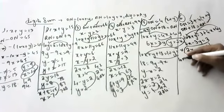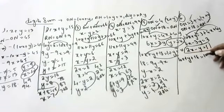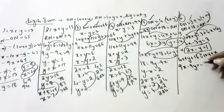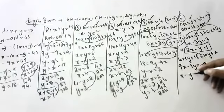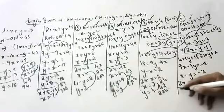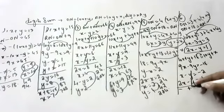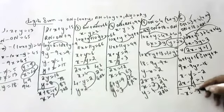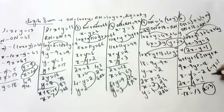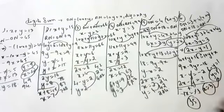Also, 10X plus Y plus 18 is equal to 10Y plus X, so 9X minus 9Y is equal to 18, giving X minus Y is equal to minus 2. From the two equations — 2X minus Y equal to 1 and X minus Y equal to minus 2 — subtracting: X is equal to 3. Substituting back: 2 times 3 minus Y equals 1, so Y is equal to 5. Original number is 35, reversal number is 53, digits are 3 and 5.